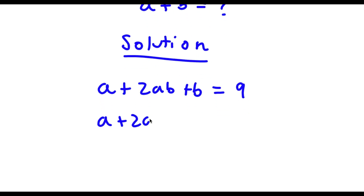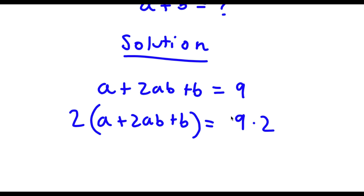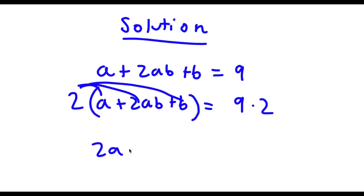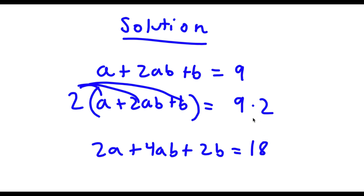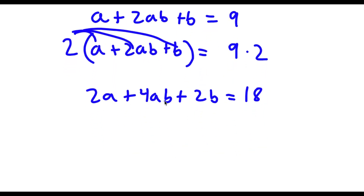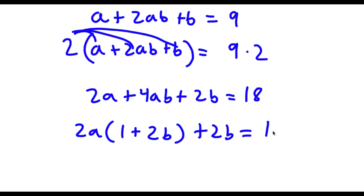Now I'm going to multiply both sides by 2. So now I have a plus 2ab plus b times 2 is equal to 9 times 2. Distributing the 2: 2 times a is 2a, plus 2 times 2ab is 4ab, plus 2 times b is 2b, and 9 times 2 is 18. Now from 2a plus 4ab, I can factor out 2a. So I have 2a times 1 plus 2b, and then we can't forget our plus 2b at the end. This is equal to 18.